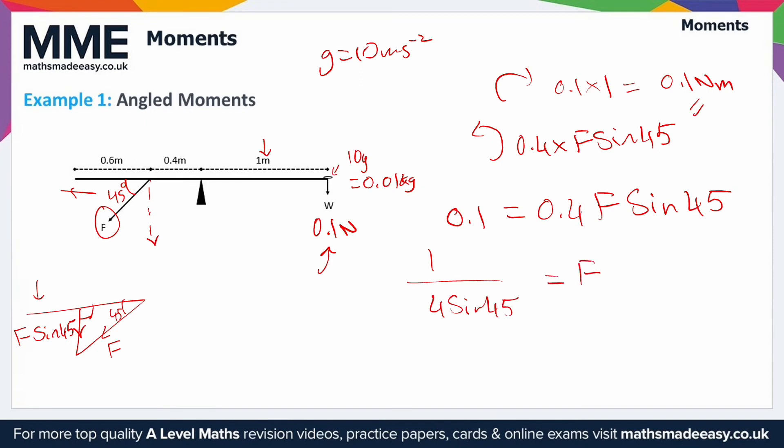Giving this to two decimal places we're going to get 0.35 newtons.